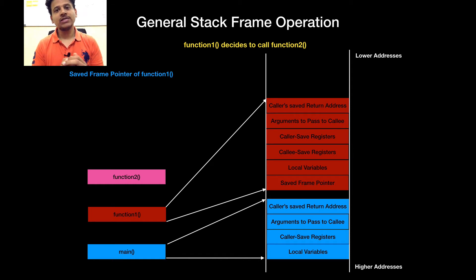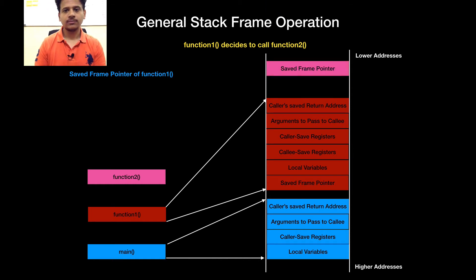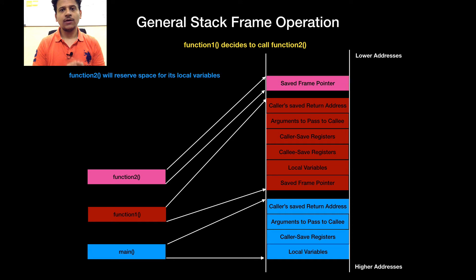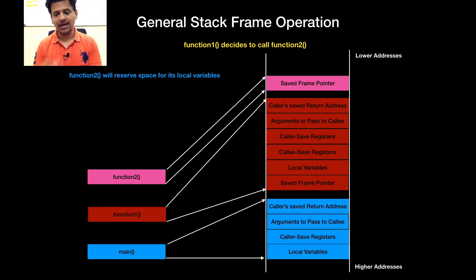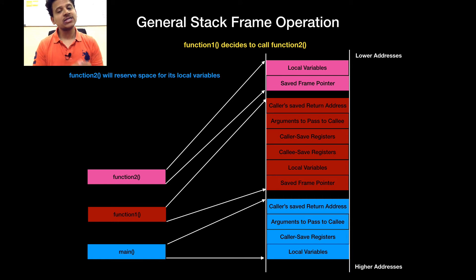First, function 2 will save the frame pointer of function 1. After that, function 2 will reserve space for its local variables onto the stack. And this goes on and on. Now let's see what happens after it finishes execution.